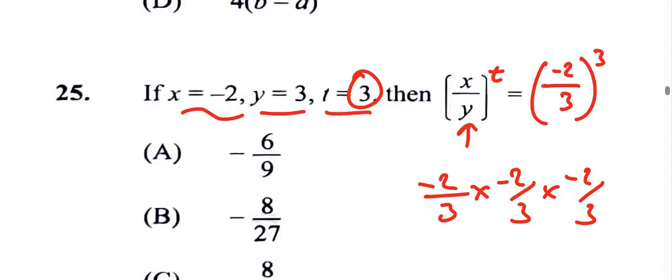Now negative times negative times negative, that's going to be negative. Once you have an odd amount, it's negative. 2 times 2 is 4, and 4 times 2 is 8, so that'll be 8. 3 times 3 is 9, and 9 times 3 is 27. So the answer is -8/27, which is B.